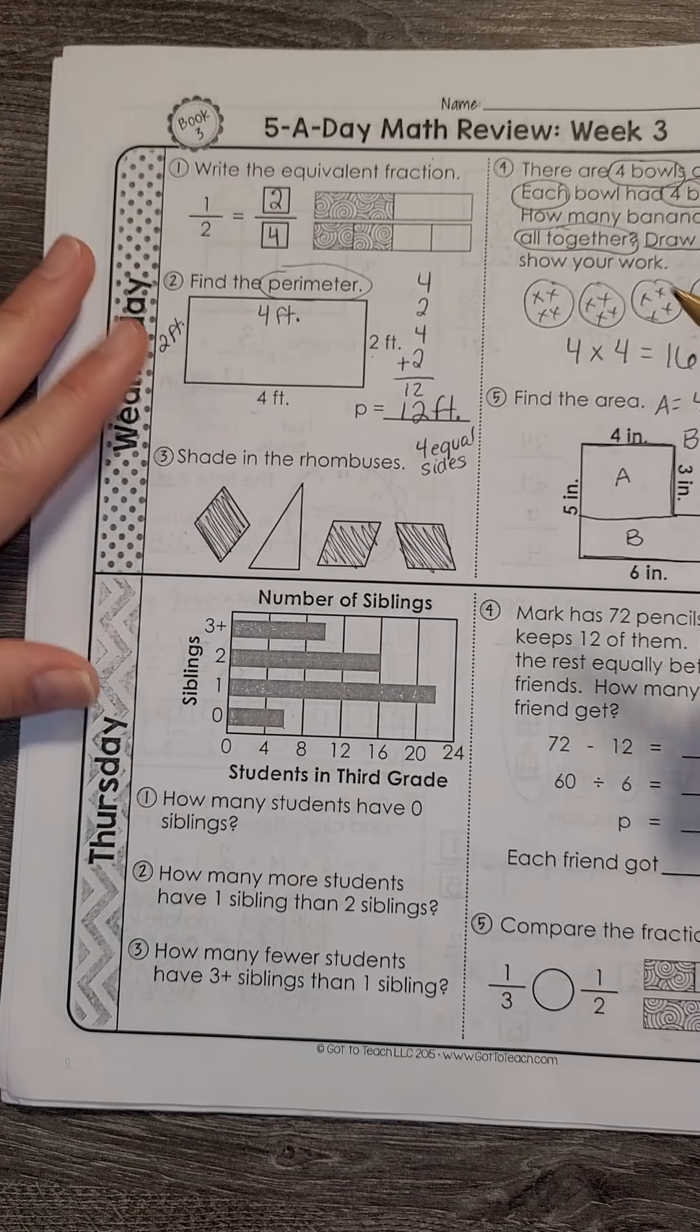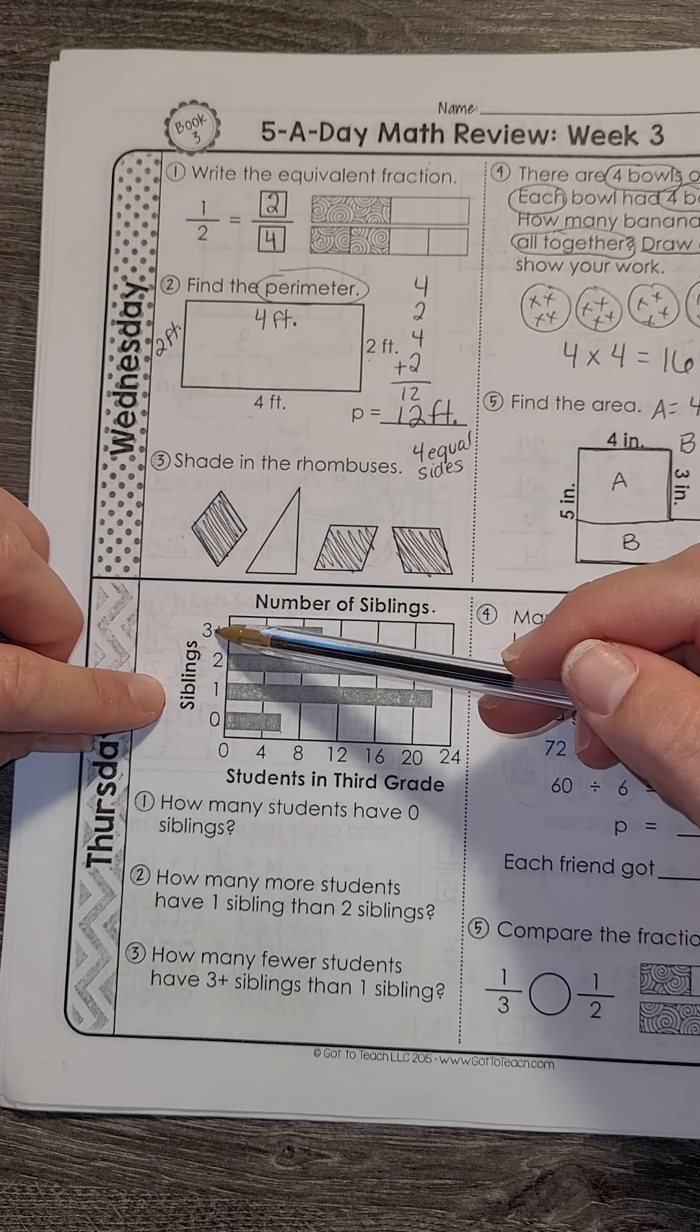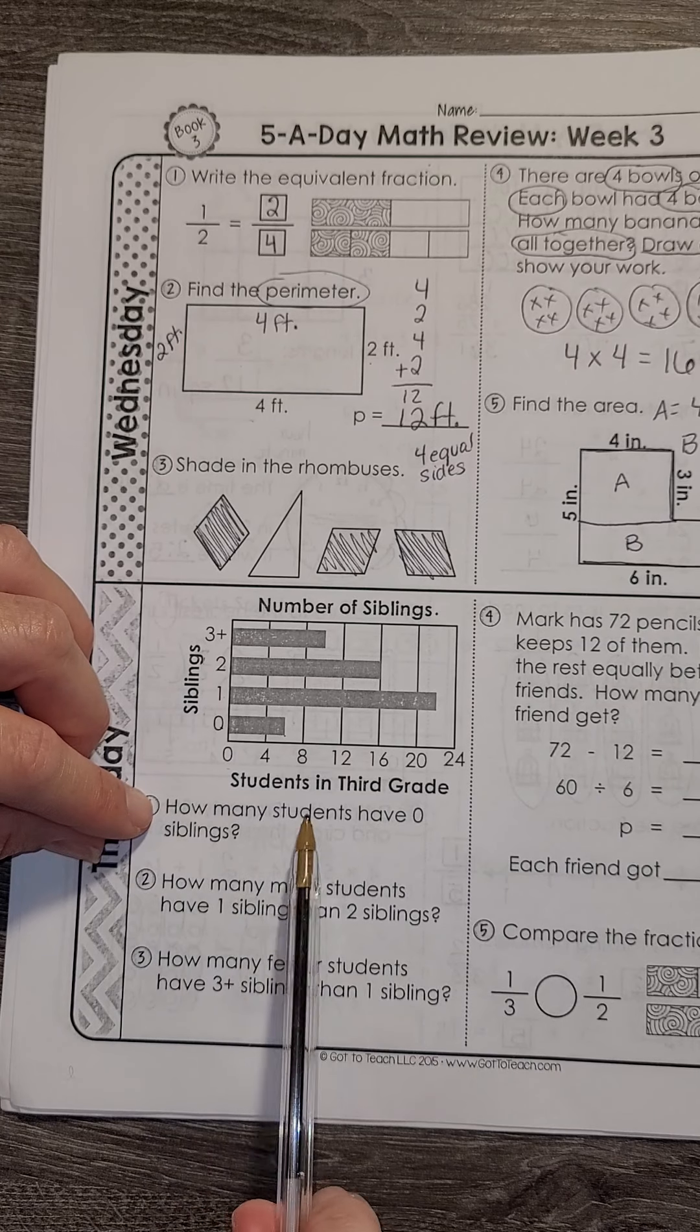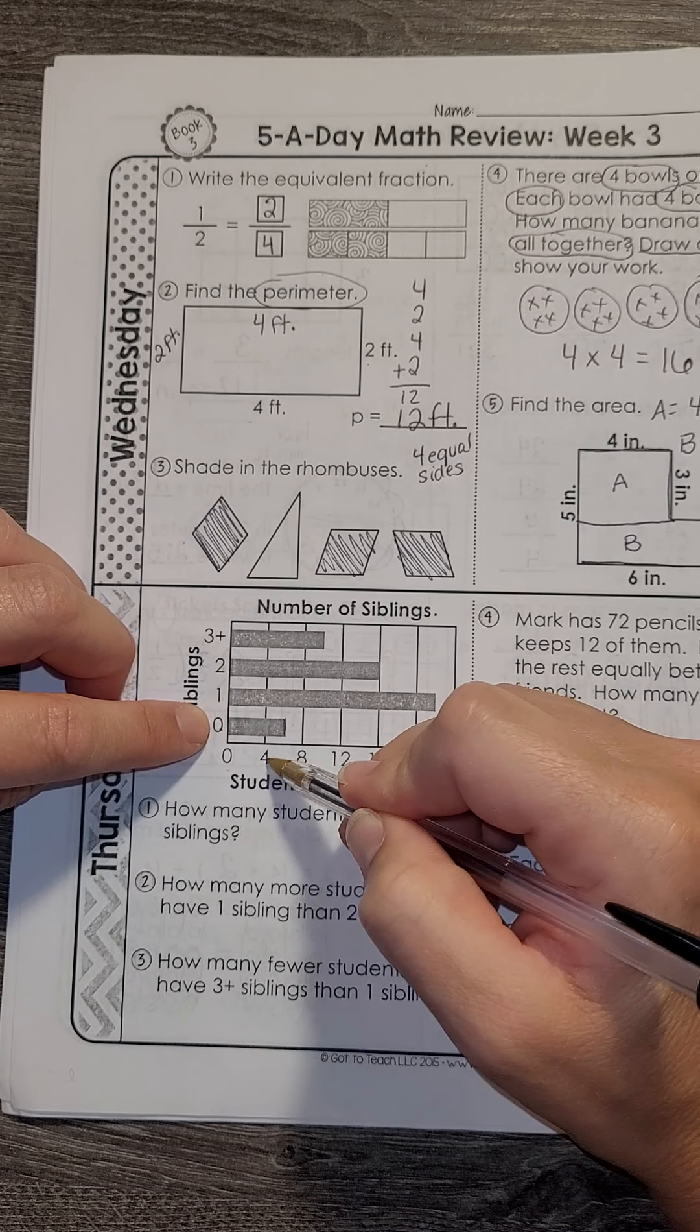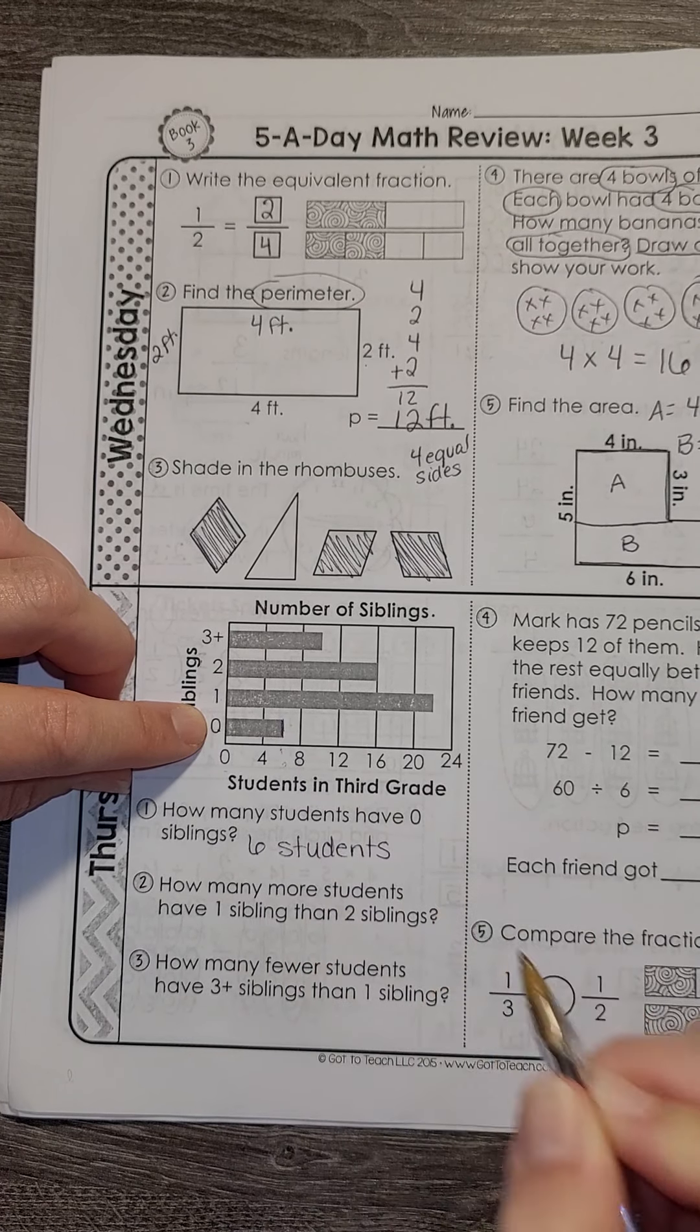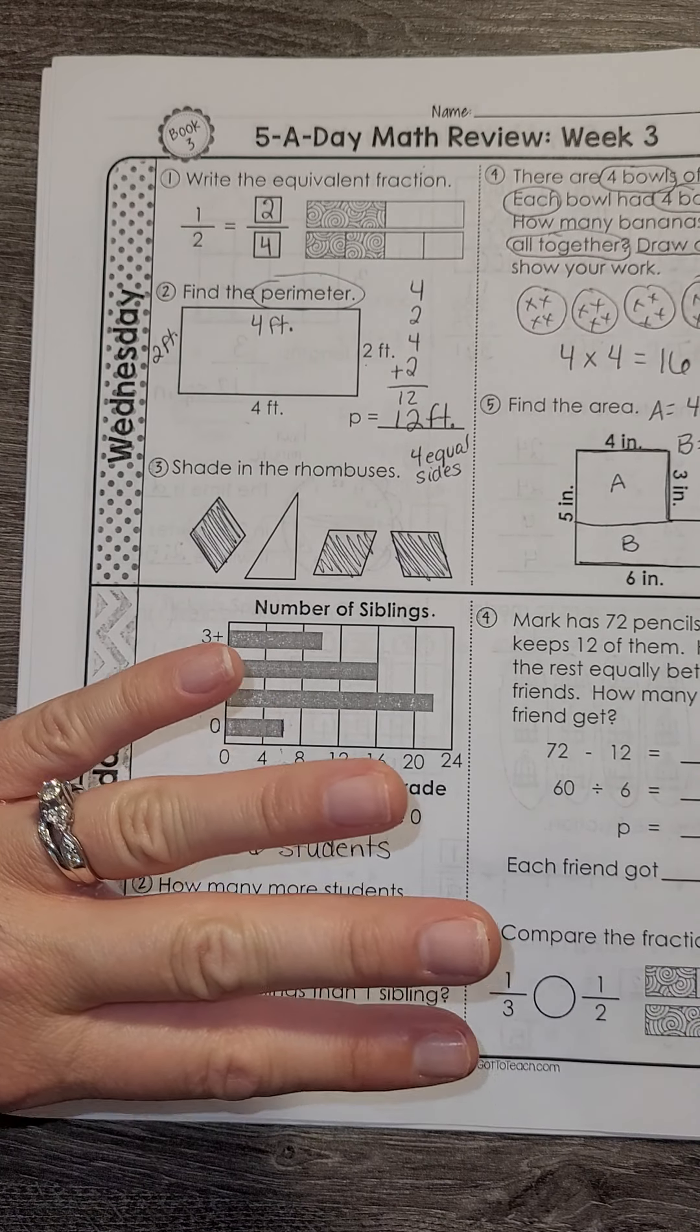And then Thursday is bar graph. So we have a graph showing siblings. The side is telling me how many siblings. So they have zero, one, two, or three or more siblings. And the bottom is counting the number of students that have those siblings. And they're counting by fours. So how many students have zero siblings? I'm going to go to the zero. I go to the line and it's halfway between four and eight. So halfway between would be six. So our answer here is six students. They're counting by four. So four, five, six, excuse me, five, six, seven, and eight. So we have to count halfway. So that would be five and six.